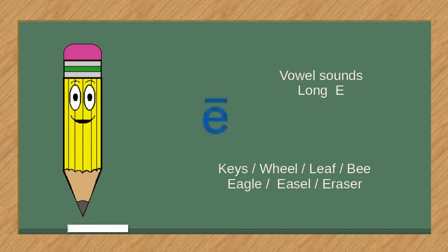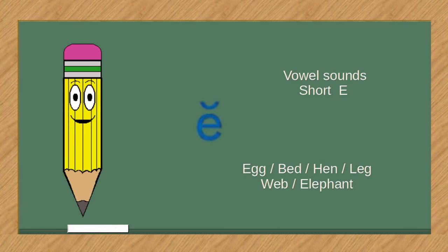Vowel sounds, long E. Keys, wheel, leaf, bee, eagle, easel, eraser.